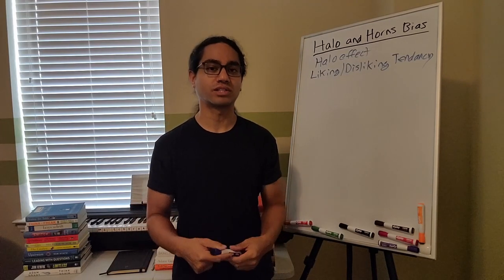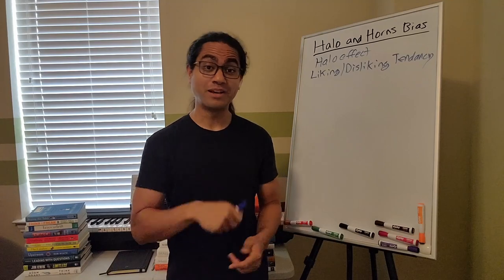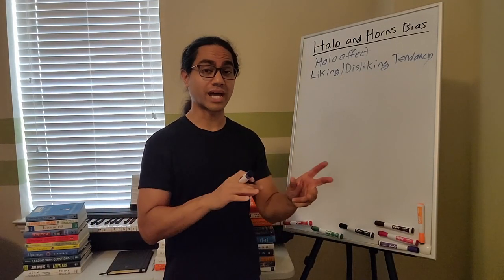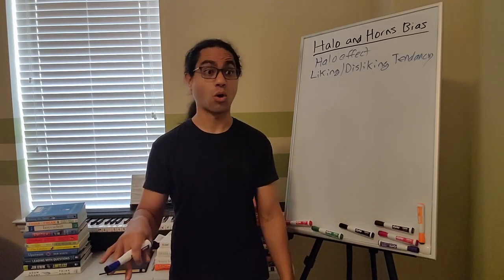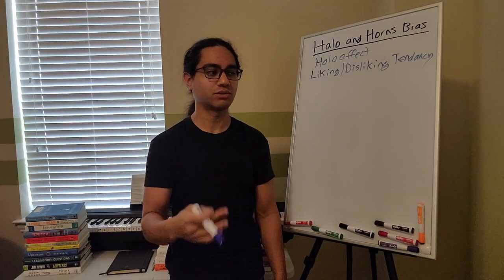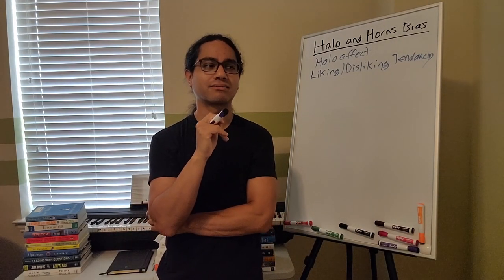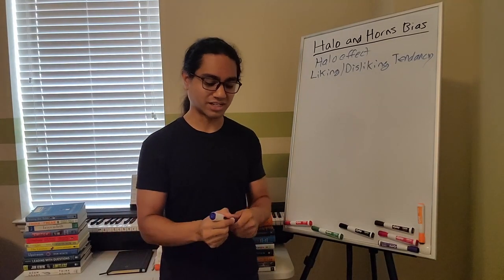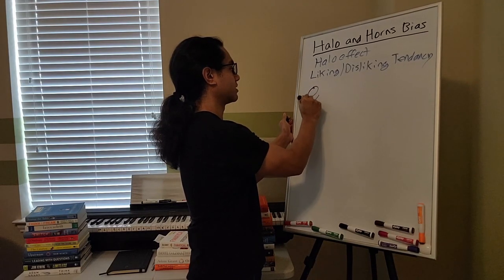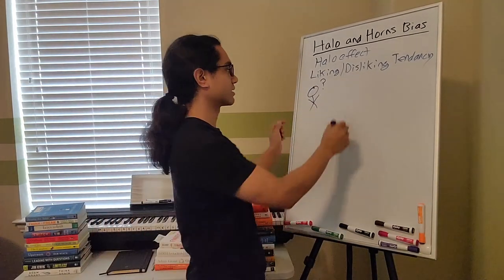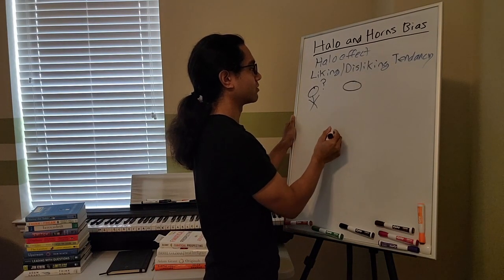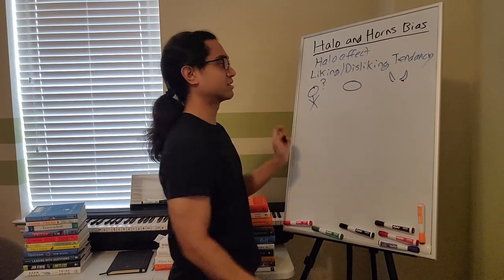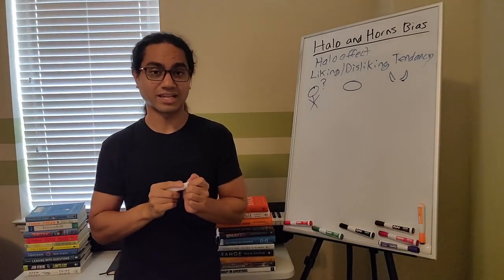Let me explain what they represent. This bias, also known as the liking-disliking tendency, basically says that things you like — whether they be people, movements, companies, whatever — have a little halo above them. If you like it, everything that it does for the most part is good. Here, let me draw: here's you, thinking, with a question mark. One of the things has a halo above it, and one of the things has horns — these represent a decision you're making about two different things.